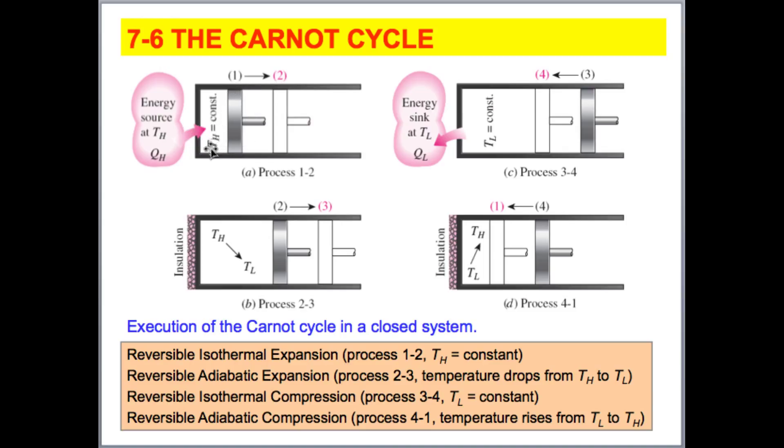As we first have an energy source that's hot, we have something that's hot transferring heat to this piston. As the heat is transferred, we expand. This causes the piston to expand. We're adding energy to this system. Then, as we remove this energy source, maybe we make this adiabatic. We have an adiabatic expansion process as this system begins to cool.